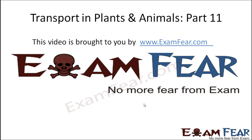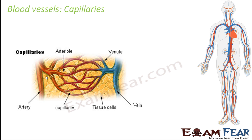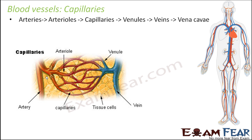This video on transport in plants and animals is brought to you by ExamFear.com. The third type of blood vessel is the capillary. Capillaries are very thin, tube-like structures which carry blood and have extremely thin walls.